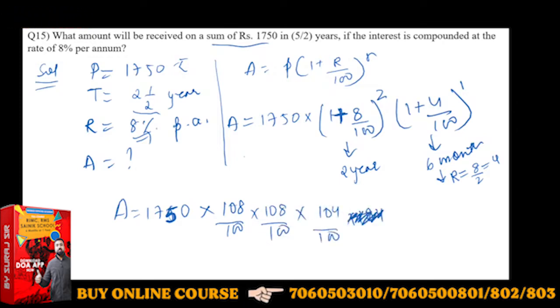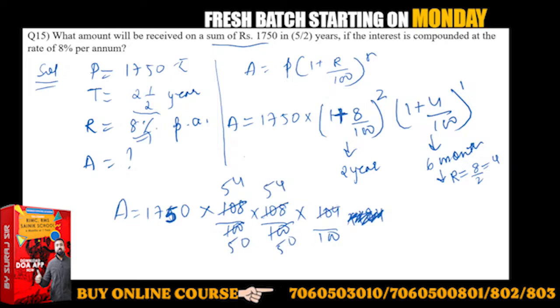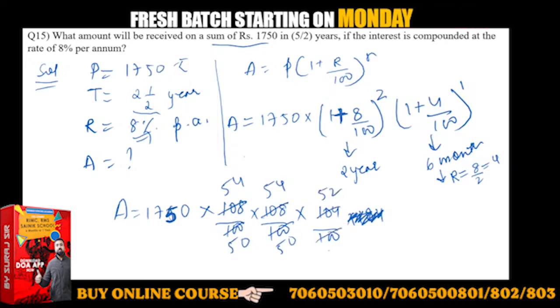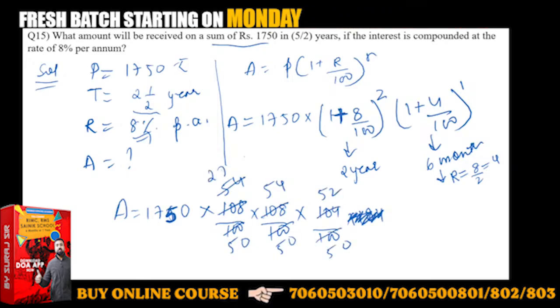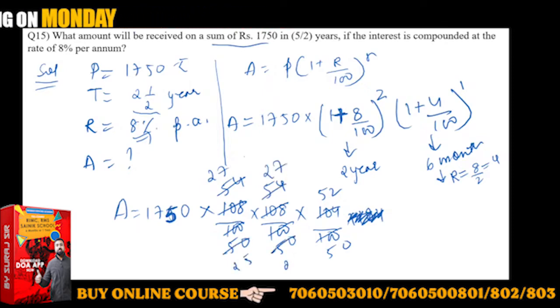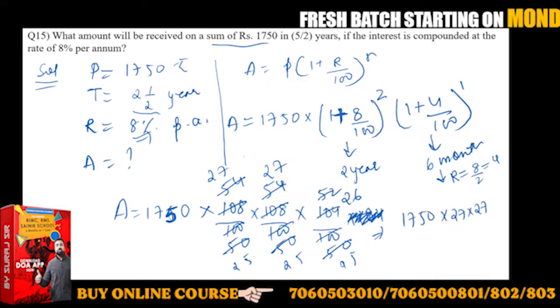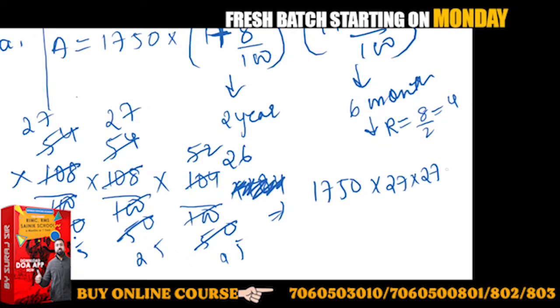To solve this, reduce by halving repeatedly: 108 becomes 54, then 27; 100 becomes 50, then 25; 104 becomes 52, then 26. So we get 1750 into 27 into 27 into 26 upon 25 into 25 into 25 into 25.